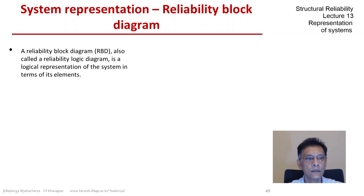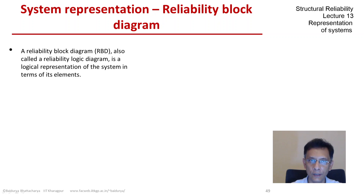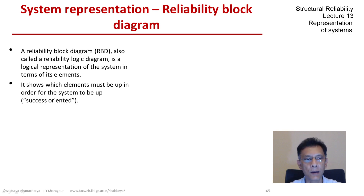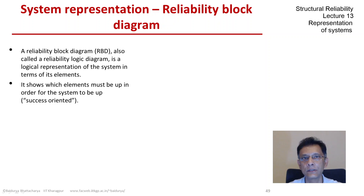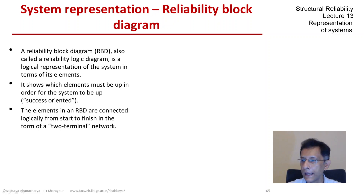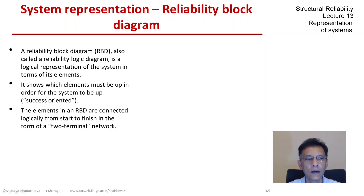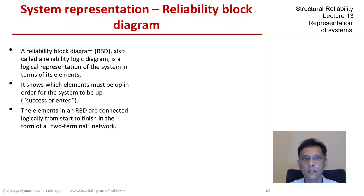An RBD, also called a reliability logic diagram, is a logical description of the system in terms of its elements — we have seen some examples in the last few weeks. It shows which elements must be up in order for the system to be up, so it's a success-oriented approach. The elements in an RBD are connected logically from start to finish, so we have a start terminal and an end terminal — it's kind of a two-terminal network.